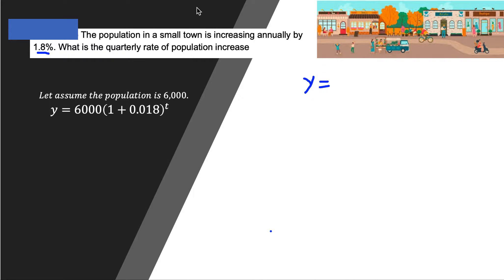Now let's write this in terms of quarterly: 6000 times, and we can write this way, 1 plus 0.018 is 1.018, everything raised to t.